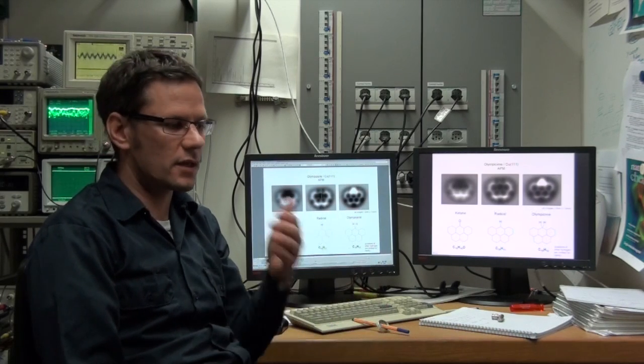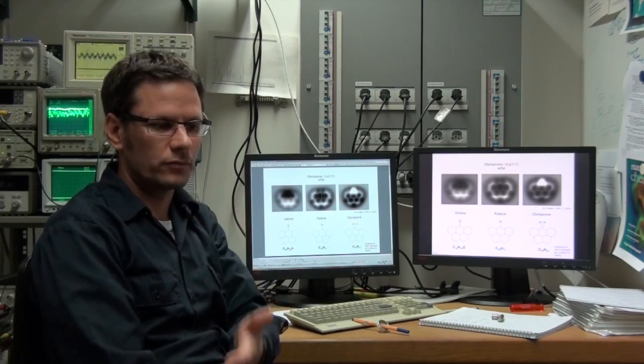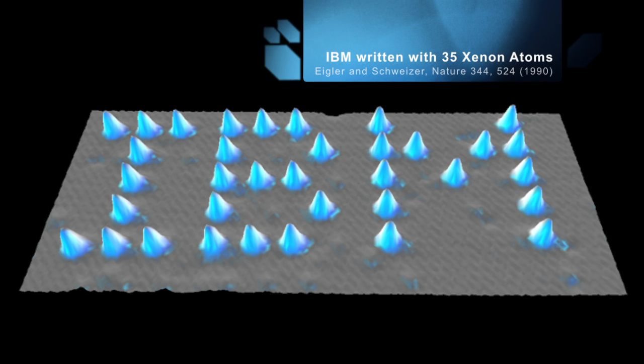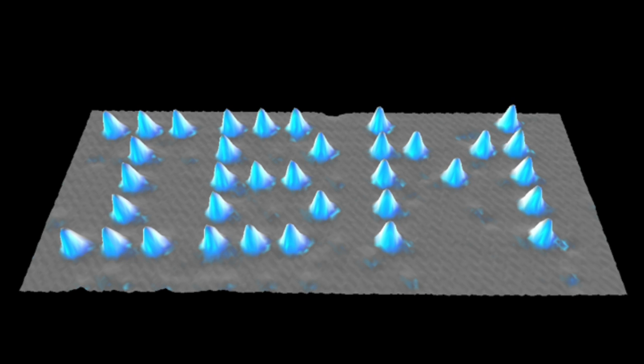And just an example, so 22 years ago, Eichler and Schweitzer did this famous IBM logo pushing single atoms. And this is of course an amazing achievement. And it's still one of the smallest things we can do. It's writing with single atoms.